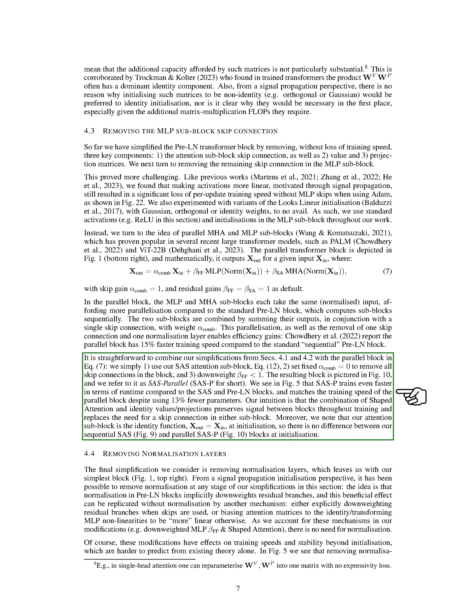We combined our simplifications with this parallel block by using our SAS sub-block, setting the skip gain to 0 to remove all skip connections in the block, and reducing the residual gain of the MLP sub-block to less than 1. We named the resulting block SAS-Parallel, or SAS-P for short. We found that SAS-P trains even faster in terms of runtime compared to the SAS and pre-LN blocks, and matches the training speed of the parallel block despite using 13% fewer parameters. We believe that the combination of ShapedAttention and identity values and projections maintains the signal between blocks throughout training and eliminates the need for a skip connection in either sub-block.